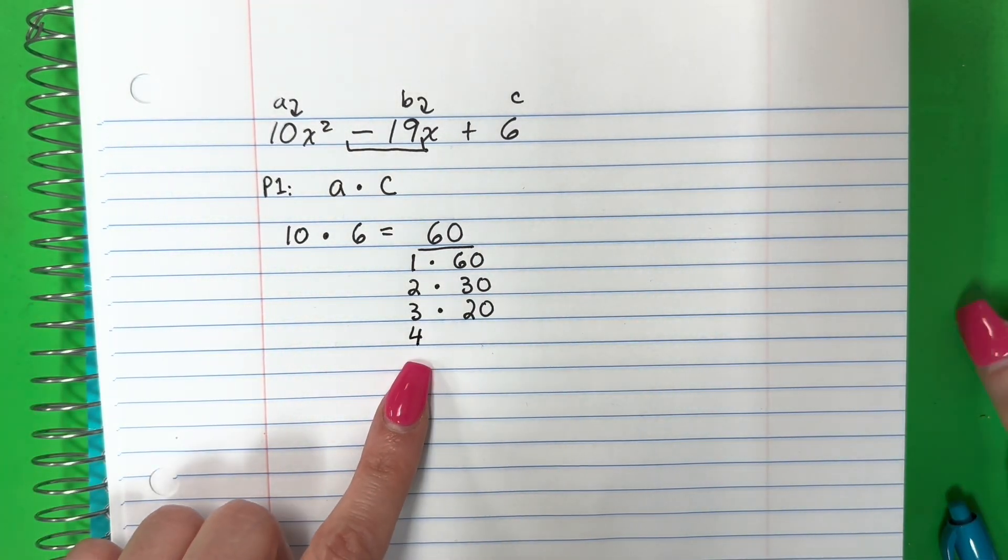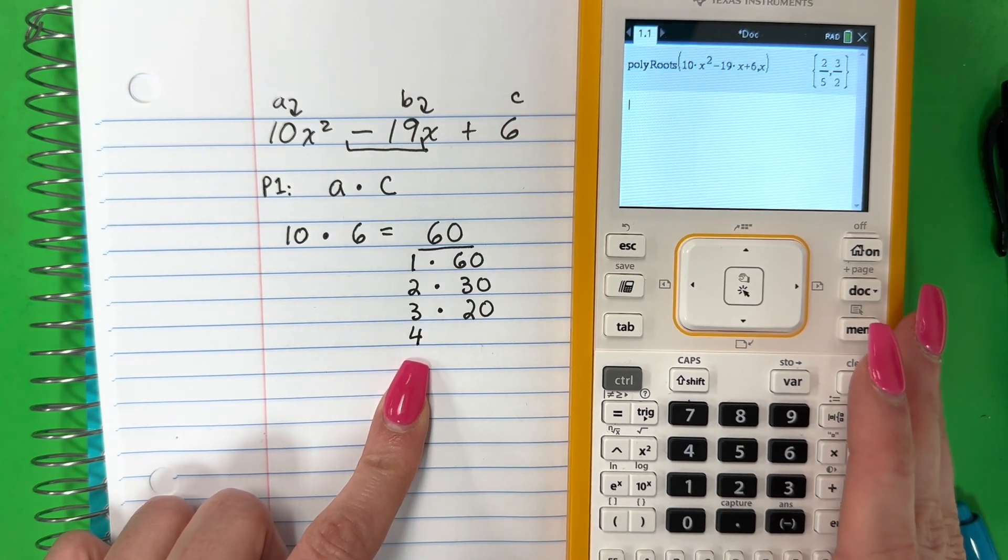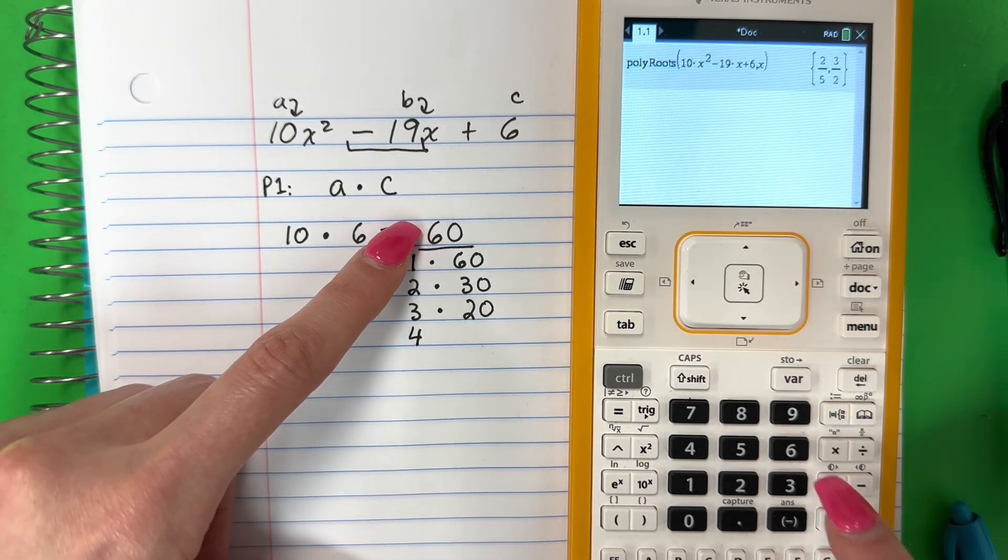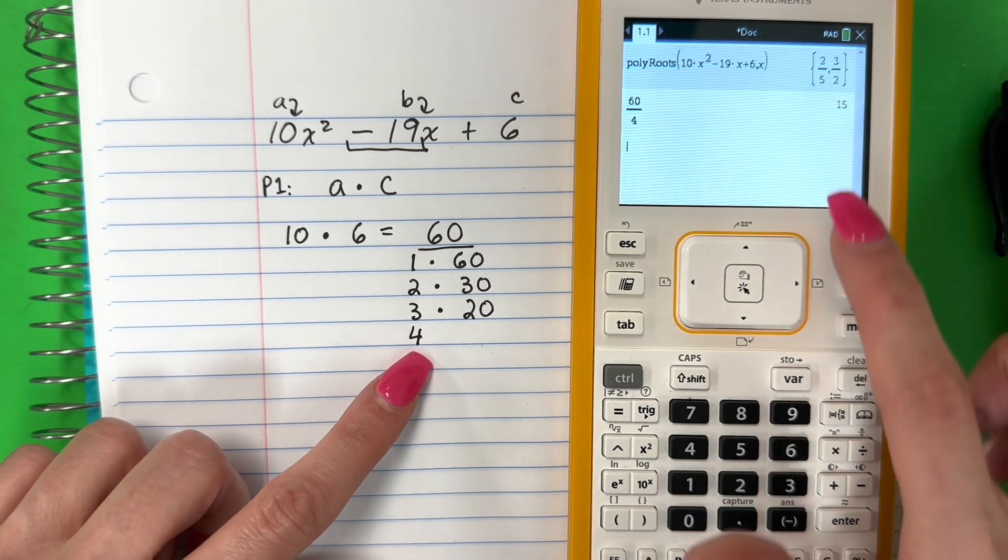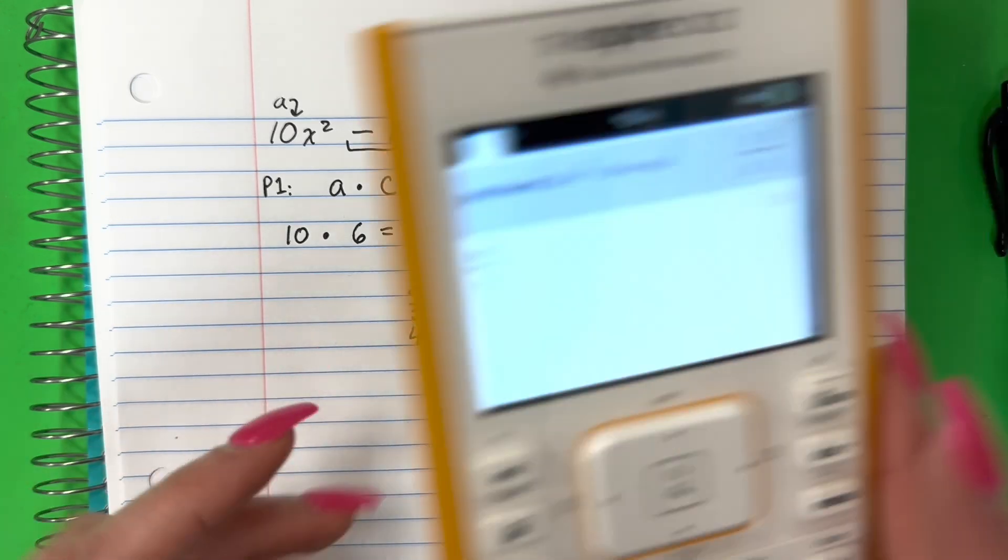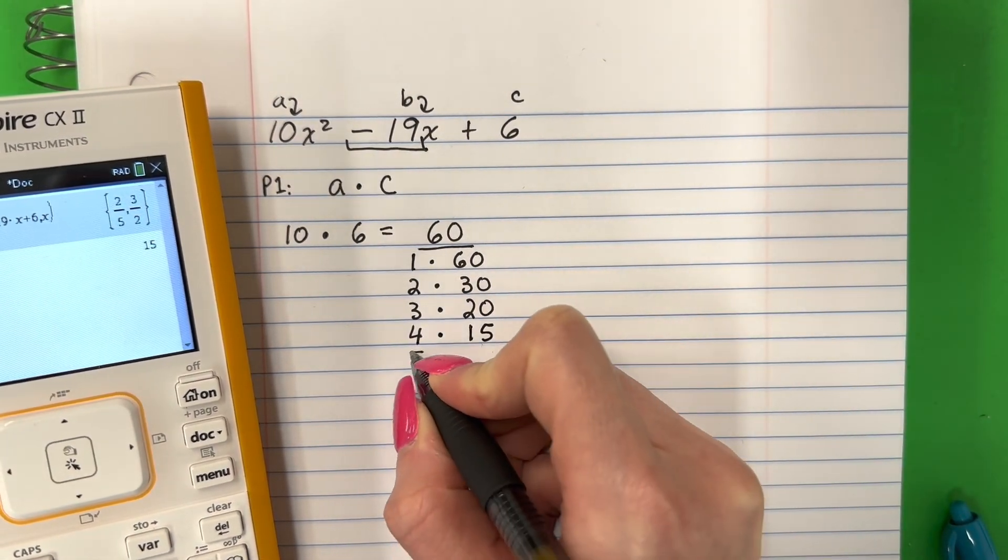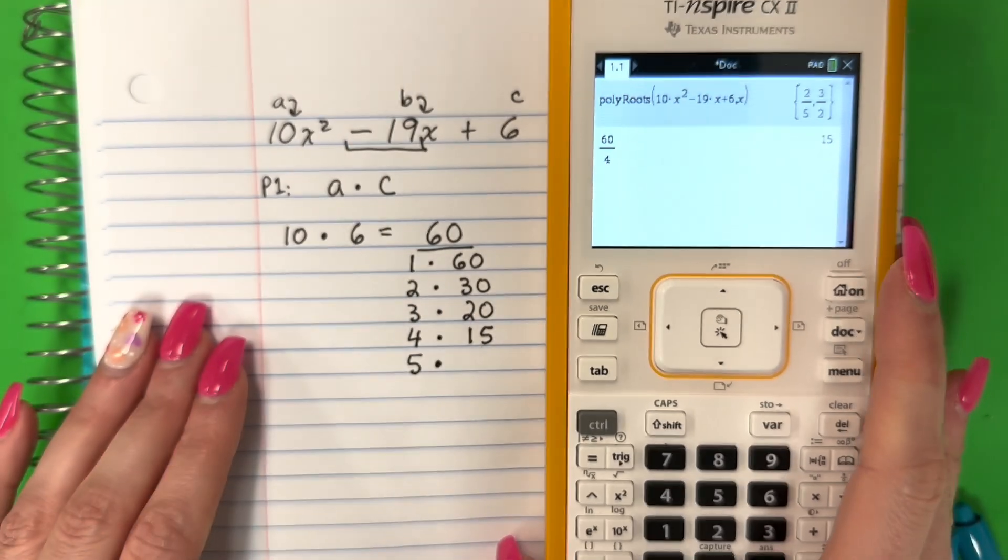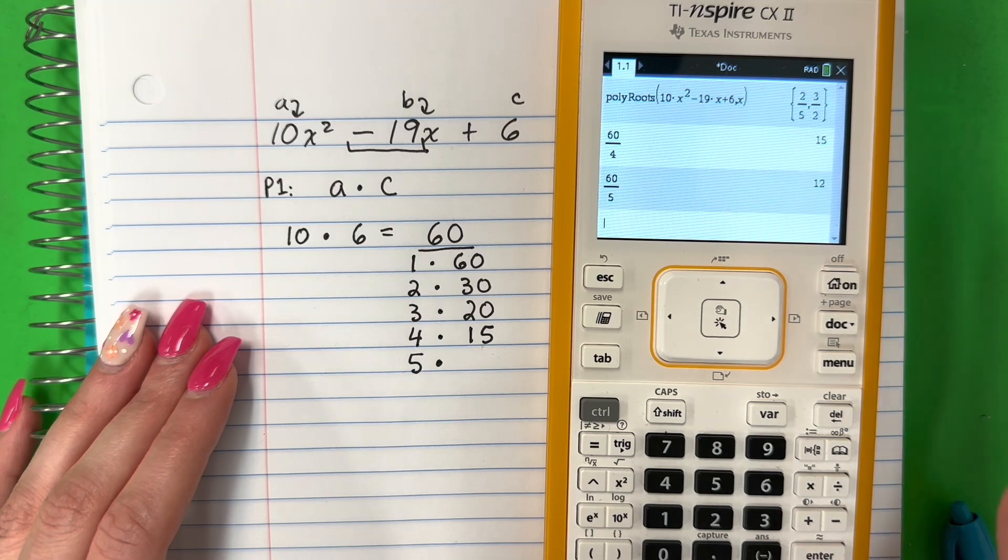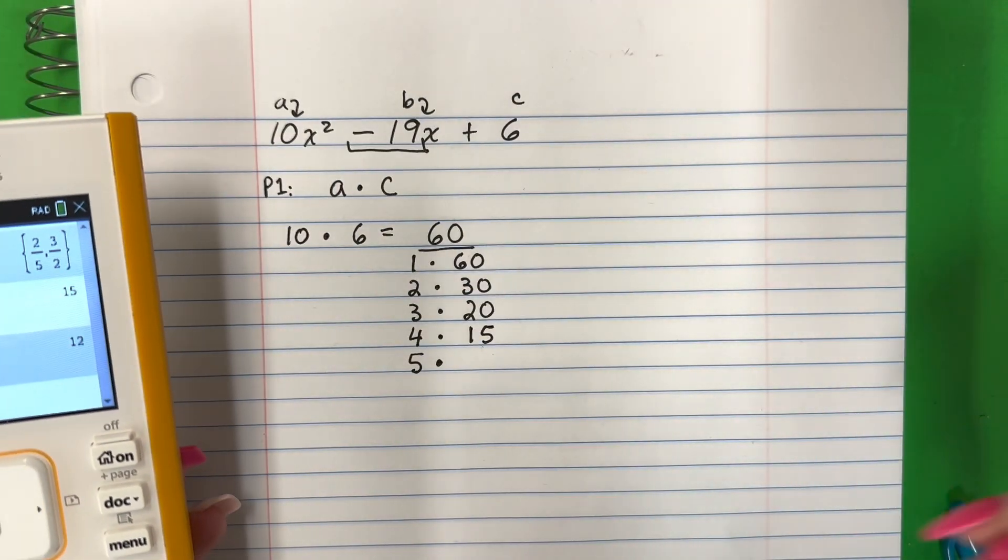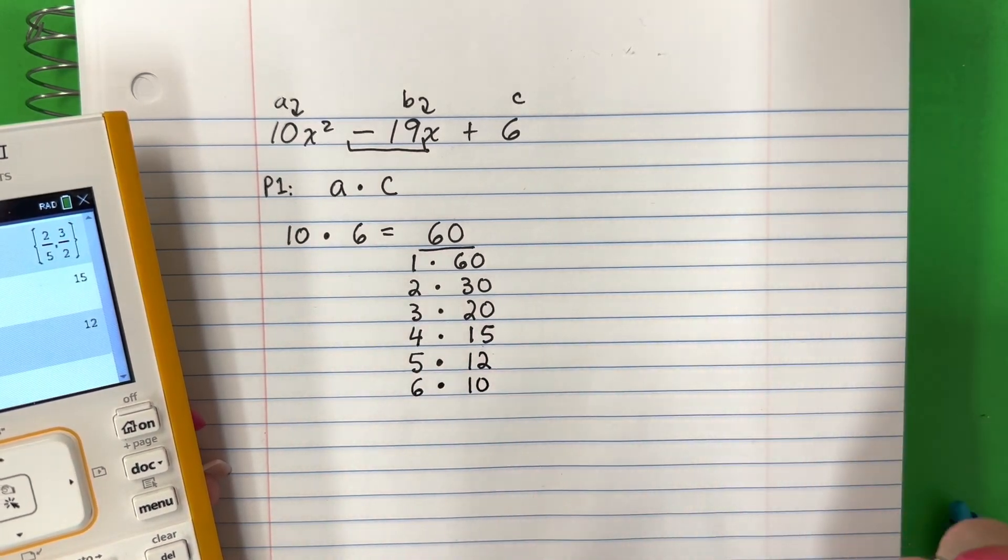Four. Now if you don't know, si no saben, you can check with the calculator. Pueden checar con la calculadora si no saben. You can do sixty divide four. Sixty divided by four is fifteen. So four times fifteen. Cuatro por quince. That is sixty. Let's do five. Sixty divided by five. Sesenta entre cinco. That is twelve. Five times twelve. Twelve. Okay. And then six times ten. Seis por diez.